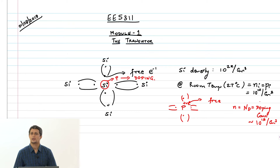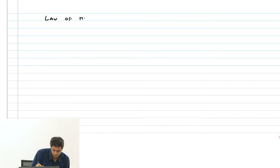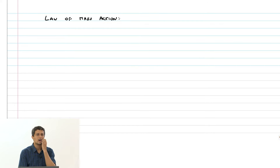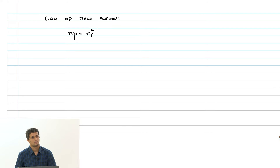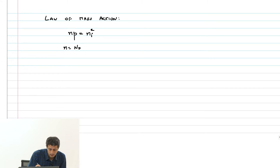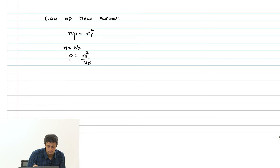How many holes are there in this doped semiconductor? There is a law of mass action which states that the concentration of electrons times holes is a constant equal to ni². So if n equals ND, then p equals ni² divided by ND.